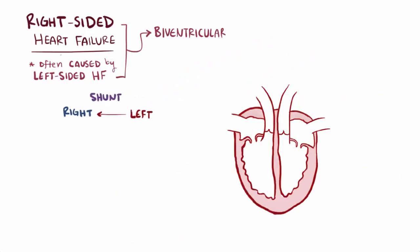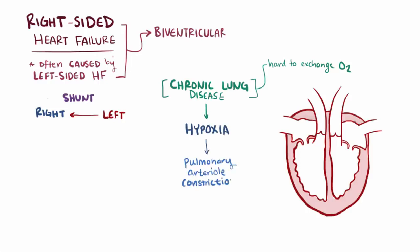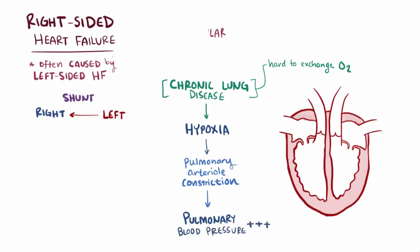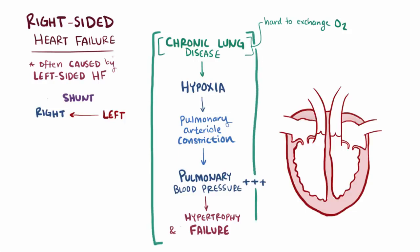Another potential cause of isolated right-sided failure is chronic lung disease. Lung diseases often make it hard to exchange oxygen, and in response to low oxygen levels or hypoxia, the pulmonary arterioles constrict, which raises the pulmonary blood pressure. This just like before makes it harder for the right side of the heart to pump against, and can lead to right-sided hypertrophy and heart failure. When chronic lung disease leads to right-sided hypertrophy and failure, it's known as cor pulmonale.